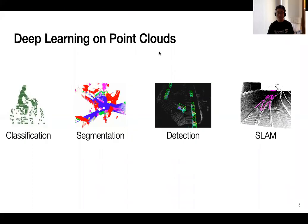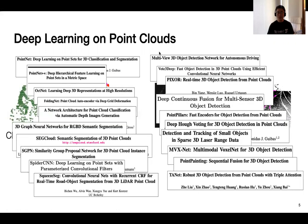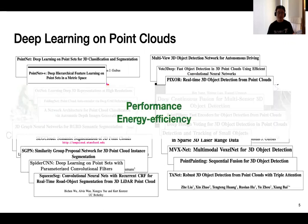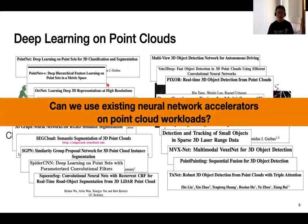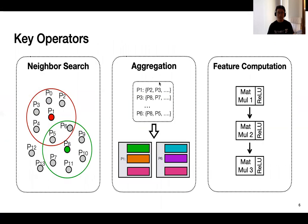Recently, for tasks like object detection and classification, people have developed many deep learning-based approaches for those tasks. And our focus here is to improve the performance and energy efficiency. With all the existing DNN accelerators, a simple question here is: can we directly use them on point cloud workloads? So to answer this question, we first need to understand how point cloud networks work. It turns out that there are mainly three key operators. Here, we'll go through them one by one.